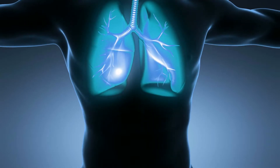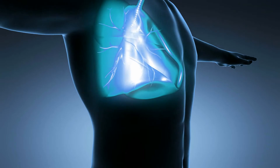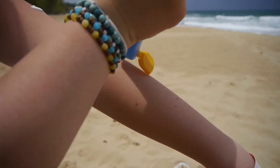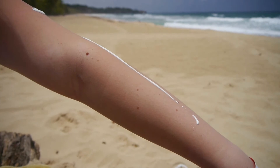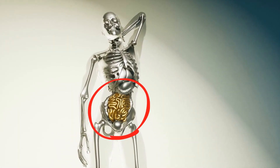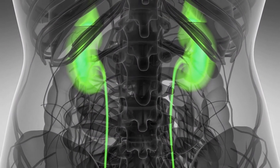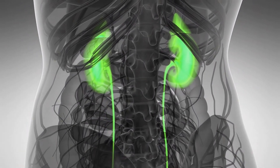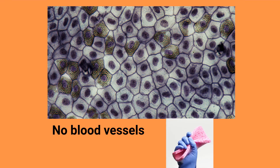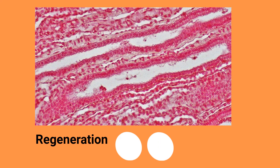Epithelial tissues line cavities and cover surfaces of vessels and organs. They protect us from the outside world and make up the lining of your stomach and intestines, and also help your kidneys filter blood and form glands and their many secretions. Epithelial tissues do not have blood vessels but can soak up nutrients from blood vessels and connective tissues underneath. They are also very good at regeneration.